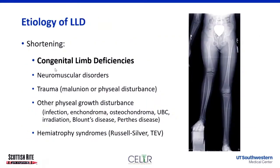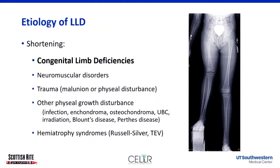The broad etiologic categories we look at are: congenital limb deficiencies, neuromuscular disorders, post-traumatic growth disturbances, and hemi-atrophy syndromes. We'll discuss each one briefly.